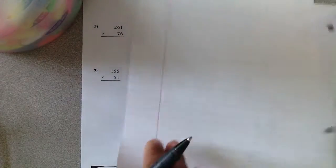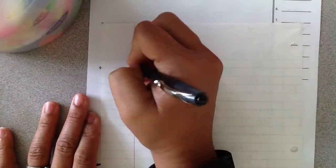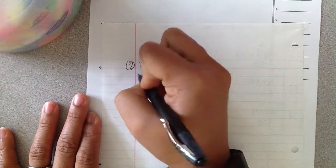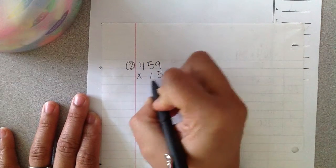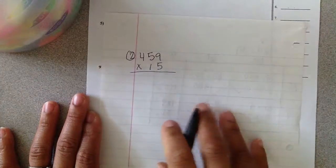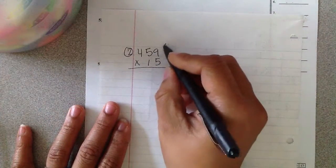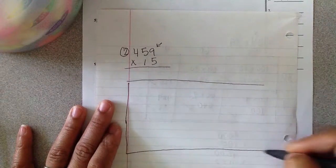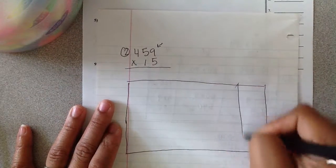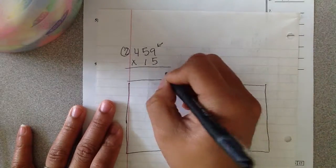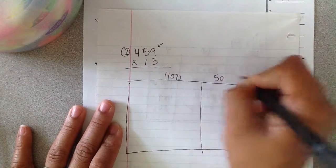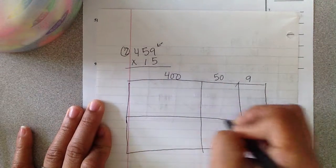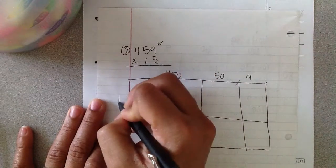Let's look at number two. Number two is 459 times 15. That's the way you would write it for standard algorithm. Three digits up top. So I'm going to make a box big enough to have three digits going along top.